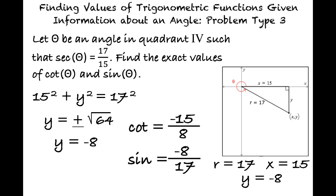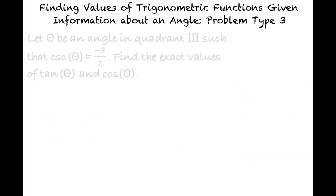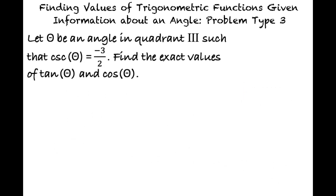Okay, I think I'm starting to understand this topic, but can we do another quick example just to be sure? Sure. Consider the following example. Let theta be an angle in quadrant 3 such that the cosecant of theta equals negative 3 halves. Find the exact values of tangent of theta and cosine of theta.